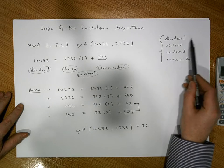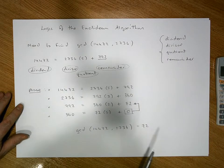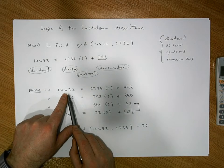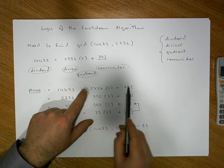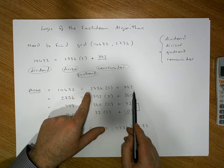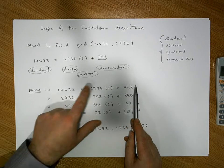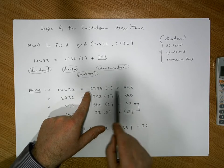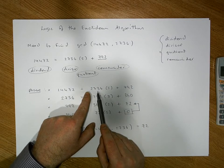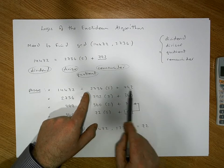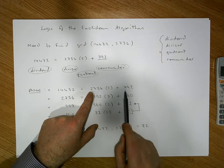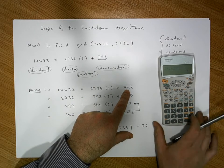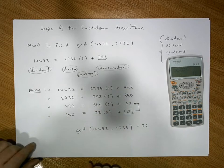This process of keeping track of dividends, divisors, quotients and remainders — let's see what happens with 72. We know 72 divides into 14472, and 14472 is equal to this whole number here. So 72 must divide into this whole number, and we know 72 divides into 2736. So 72 divides into the whole number, it divides into this part, so it must divide into this remainder. Let's double check: 792 divided by 72 gives us 11. Brilliant.